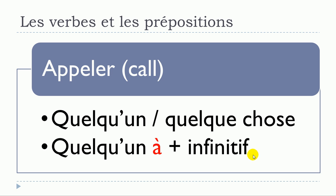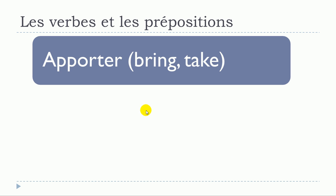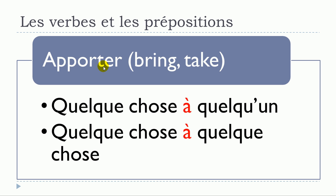Next verb: apporter. First structure — no preposition — apporter quelque chose à quelqu'un. Second structure — also no preposition — apporter quelque chose à quelque chose. So: apporter quelque chose à quelqu'un, apporter quelque chose à quelque chose.